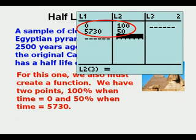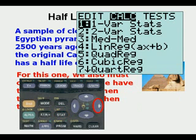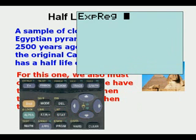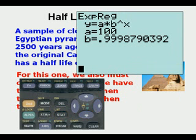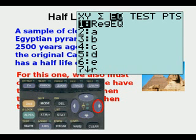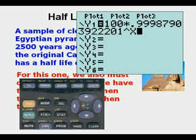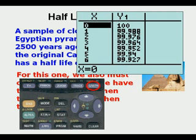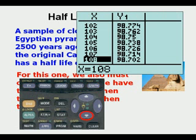We determine the function by going to StatCalc 0, press Enter twice, and there is our function. We're going to paste it into our function editor by pressing Y equals, then Vars, then 5, Statistics, arrow twice to the right for EQ, and there it is. Now we can go to Second, Graph, and scroll to 2,500 to get our answer.